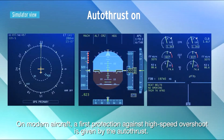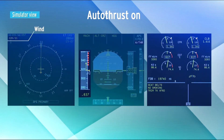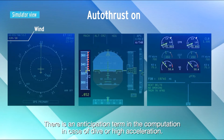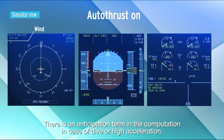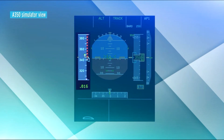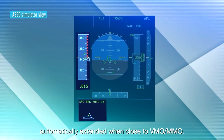On modern aircraft, a first protection against high-speed overshoot is given by the autothrust. The thrust is reduced, possibly up to idle, when approaching VMO-MMO, with an anticipation term in the computation in case of dive or high acceleration. On some airplane models, the air brakes may also be automatically extended when close to VMO-MMO.